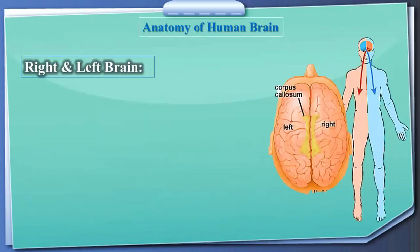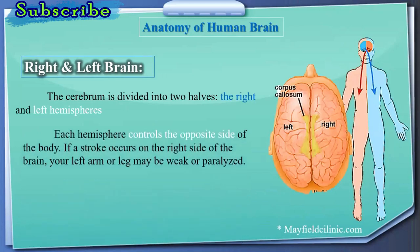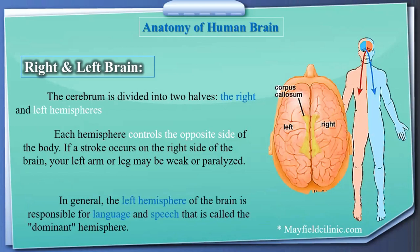The cerebrum is divided into two halves — the right and the left hemisphere. Each hemisphere controls the opposite side of the body. If a stroke occurs on the right side of the brain, your left arm or leg may be weak or paralyzed. In general, the left hemisphere of the brain is responsible for language and speech, and is therefore called the dominant hemisphere.